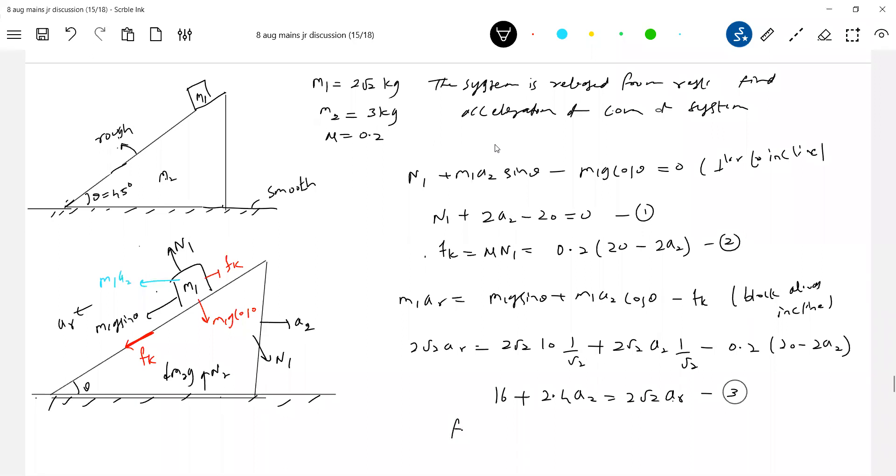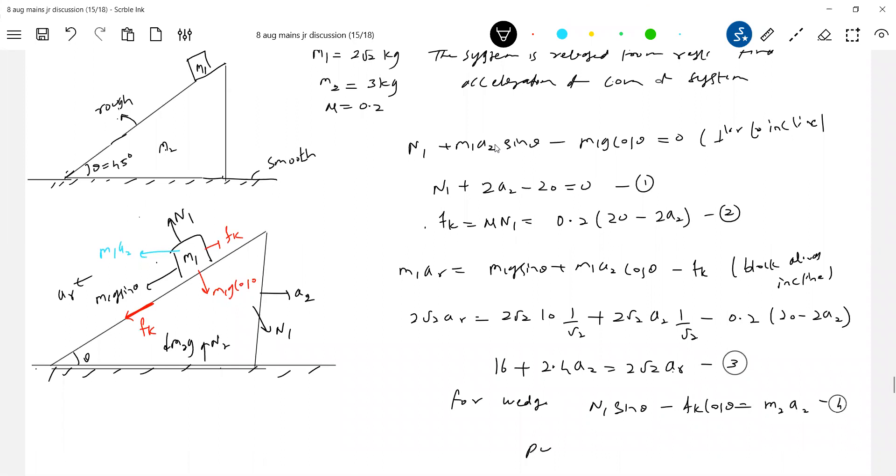For wedge, what is the equation? What are the forces that are acting on the wedge? N1 sin theta towards right and Fk cos theta towards left. It should be equal M2A2. So the equation should be N1 sin theta minus Fk cos theta equal to M2A2. This is the only forces that are acting on the wedge along x-axis. And we know N1, we know Fk, so directly we will get the value of A2. Substituting 1, 2 in equation 4. The value of A2 I am getting around 2.73 meter per second square. This is very important. This is the acceleration of the wedge along x-axis.